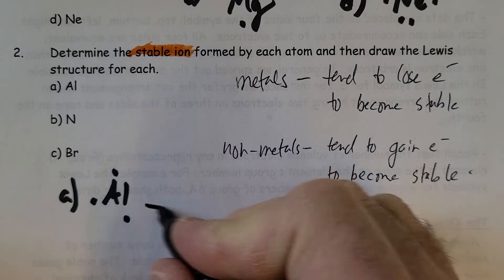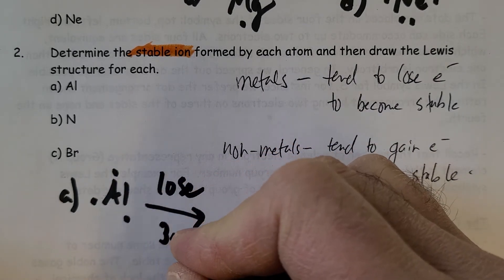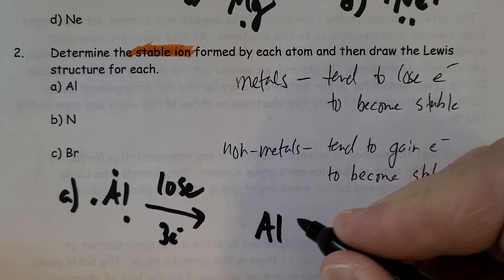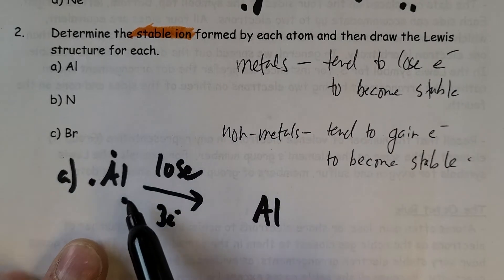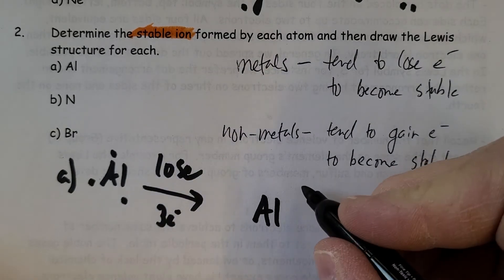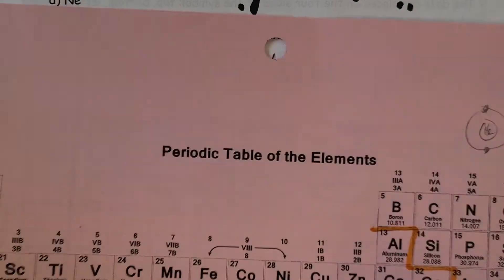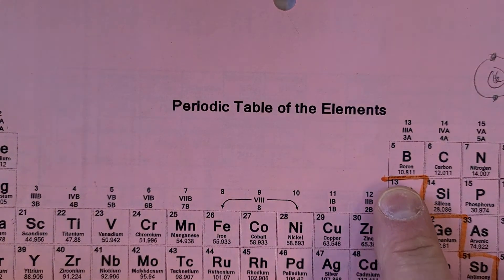So it's going to lose three electrons, and the current level will be empty and the level below will be considered to be full. If we lose electrons, if you look at aluminum here, atomic number 13...